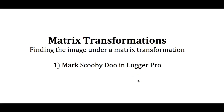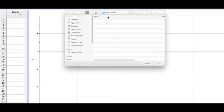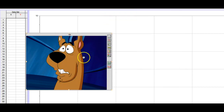I'm going to take Scooby-Doo and mark him with a bunch of points and put it into Logger Pro. We used to do this with graph paper placed over the figure, but we can also do it with Logger Pro — a lot easier and a lot more accurate. I already have my picture, so I'll go to Insert, then Picture, then Picture with Photo Analysis. Here's my Scooby-Doo.